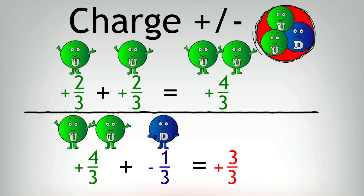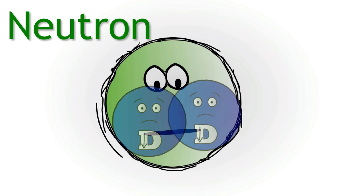A neutron was found to consist of two down quarks and one up quark, which gave it an overall charge of zero.